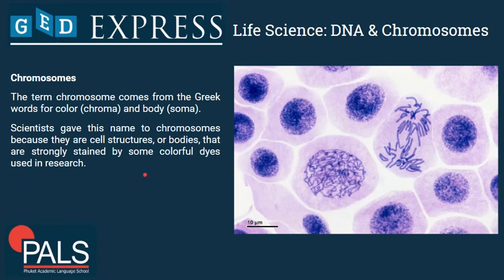What does the term chromosome mean? It comes from the Greek words for color — chroma — and body — soma — giving us 'chromosome.' Scientists gave this name to this DNA-protein complex because chromosomes can be stained very well; they can be colored by dyes under the microscope. This is what we see here: a real picture of cells under the microscope where the dark purple material is our DNA. In some cells we can see the actual X-like chromosome structures, which we saw in the previous slide.